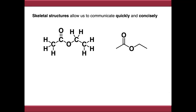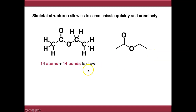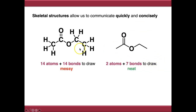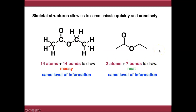Here's an example — this is the same molecule drawn two different ways: one drawing out all atoms and bonds, and one as a fully skeletal structure. In the left-hand structure we've got 14 atoms and 14 bonds to draw, whereas in the right-hand structure we've only got to draw two atoms, the oxygens, and seven bonds. The structure on the left is comparatively messier and harder to read, whereas the structure on the right is quite neat. Most importantly, both structures contain the same level of information, providing you can interpret the skeletal structure correctly.